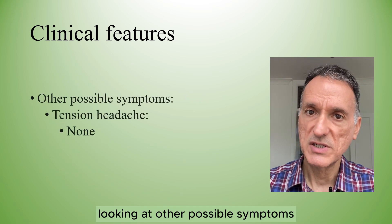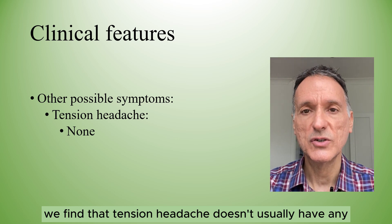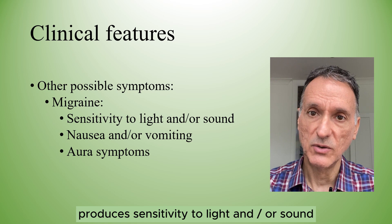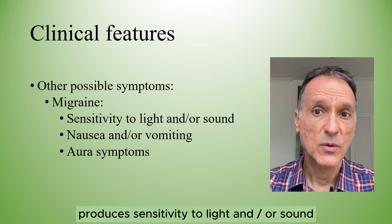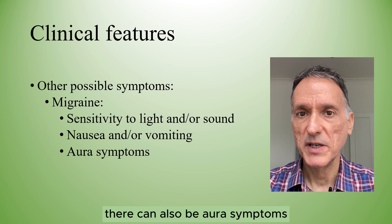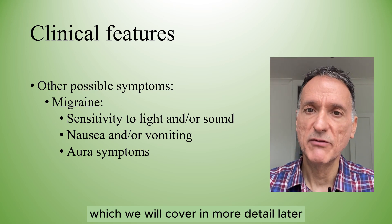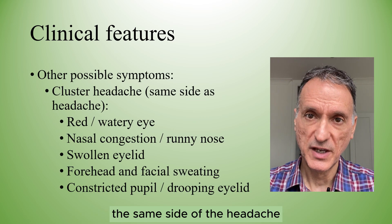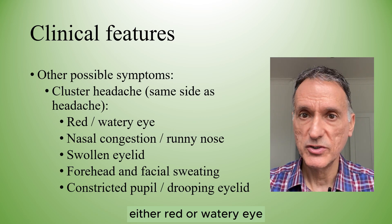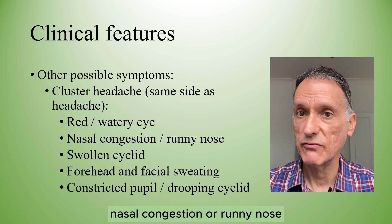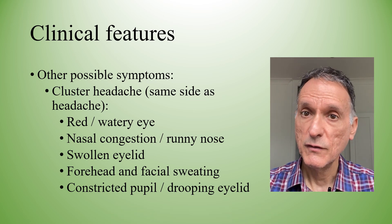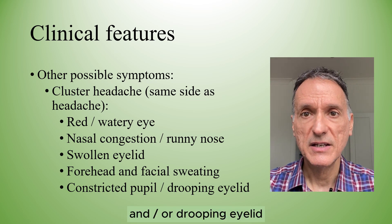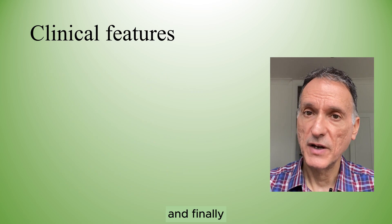Looking at other possible symptoms, tension headache doesn't usually have any. Migraine usually produces sensitivity to light and/or sound, or nausea and vomiting; there can also be aura symptoms, which we will cover in more detail later. Cluster headache will normally present on the same side of the headache with either a red or watery eye, nasal congestion or runny nose, swelling of the eyelid, forehead and facial sweating, and constricted pupil and/or drooping eyelid.